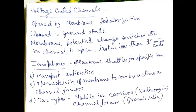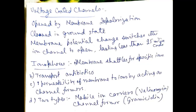Next are voltage-gated channels. They are opened by membrane depolarization and are closed in the ground state. Membrane potential changes switch the ion channels to open, lasting less than 25 milliseconds. Next are ionophores. Ionophores are membrane shuttles for specific ions. They transport antibiotics and increase permeability of the membrane to ions by acting as channel formers. Ionophores may be of two types: mobile ion carriers, for example valinomycin, and channel formers, for example gramicidin.